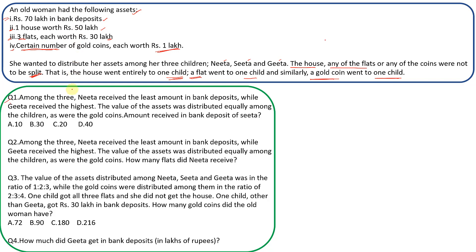Now let's look at the questions. The first question: Nita received the least amount in bank deposit while Gita received the highest. The value of assets were distributed equally among the children, as were the gold coins. We need to find the amount received in bank deposit by Sita. Let's make a table with the persons — Nita, Sita, and Gita — along one column and the assets along one row.